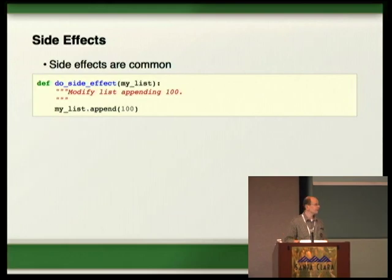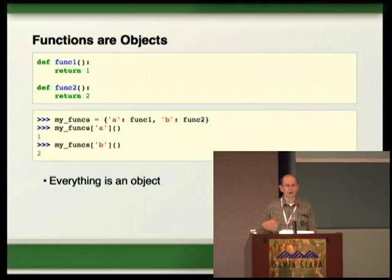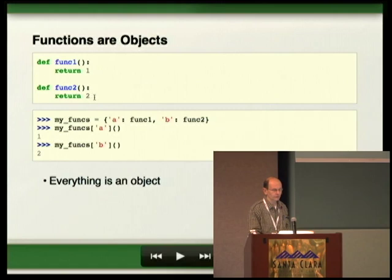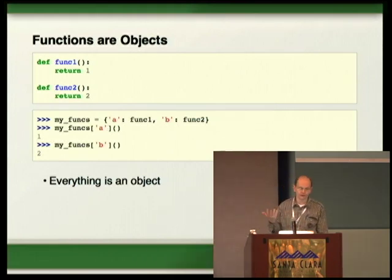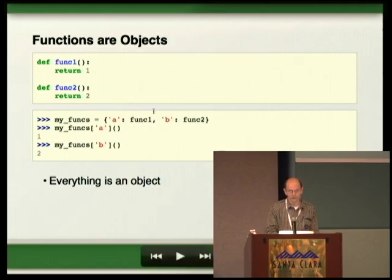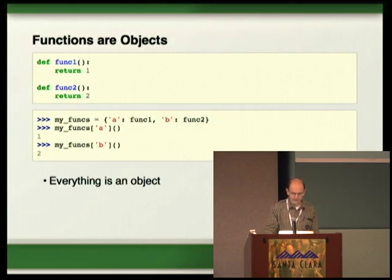Side effects are very common. Very often you get a list and append something to it — that's a side effect, something you do a lot in Python. Python has functions as objects, which helps a lot for going into functional-style programming. You can stick functions in a dictionary and get them out — this makes a lot of things possible. You can get a lot of elegant, dynamic solutions with just a little dictionary work.